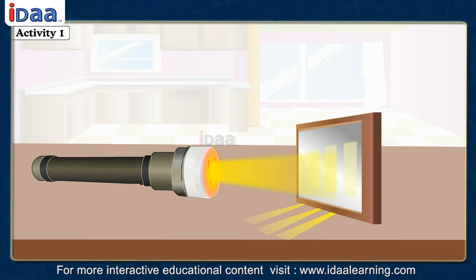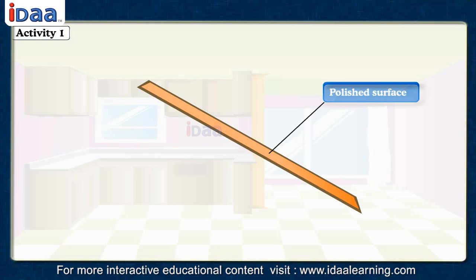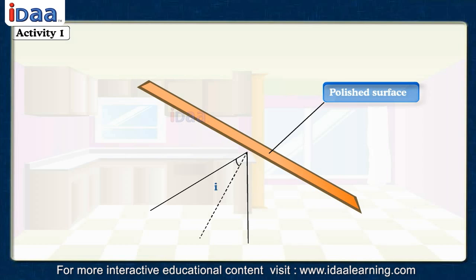What do you observe? The mirror changes the direction of light that falls on it. The entire phenomenon is explained like this: let a beam of light strike a plain mirror, forming an angle I with the normal of the mirror. The beam is reflected back, making an angle of the same magnitude with the normal of the mirror.